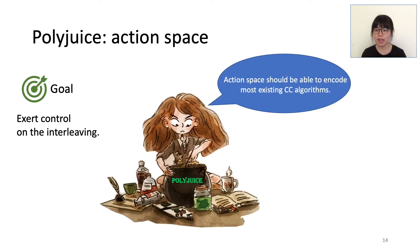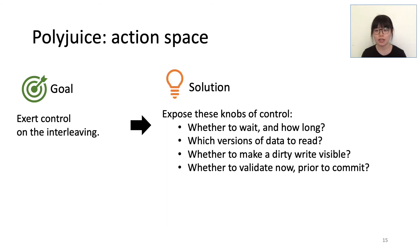Now let's look at the action space, which are the columns of the CC policy table. When designing the action space, our goal is that these types of actions can exert different kinds of control on the interleaving of accesses, and we want to make sure that the action space encodes most existing CC algorithms. The action space contains four knobs of control. First, before executing the access, does the transaction need to wait? If yes, how long should the wait be?